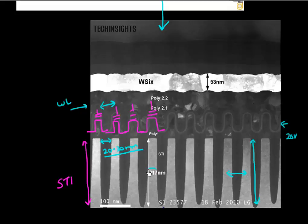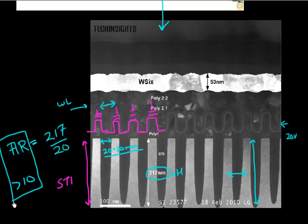If you look at the dimensions, this STI is 217 nanometers deep in this case, and it's between 20 to 30 nanometers wide. If I look at the aspect ratio, it's 217 divided by 20, which is an aspect ratio of around 10, greater than that of the Burj Khalifa.